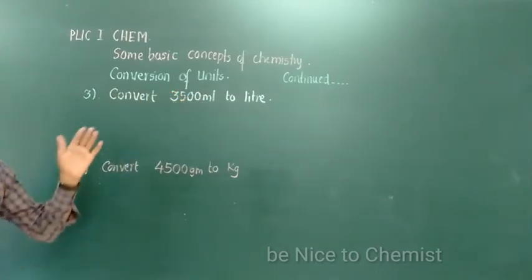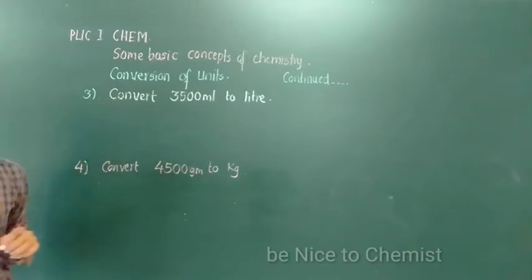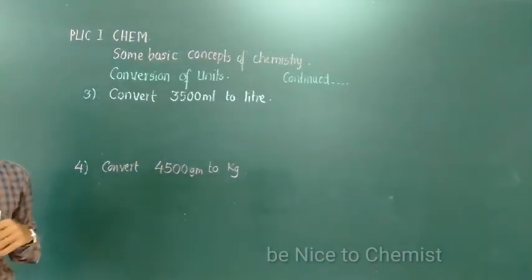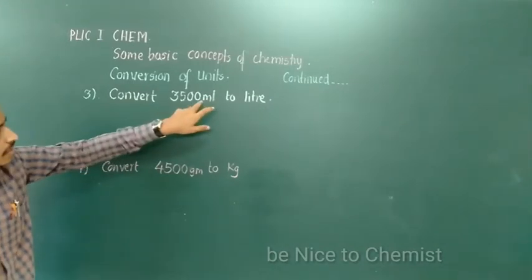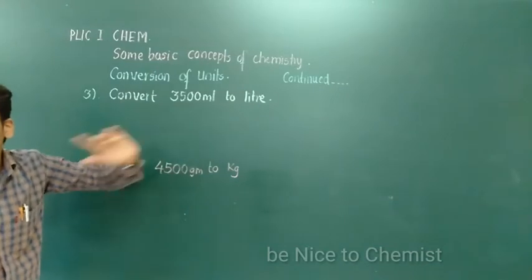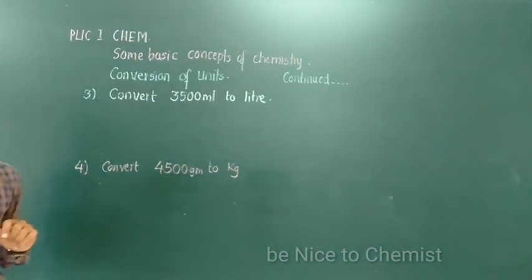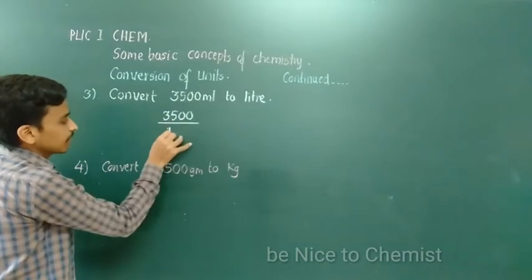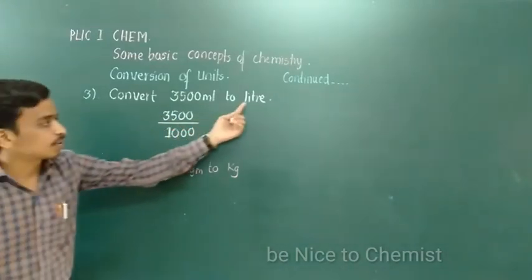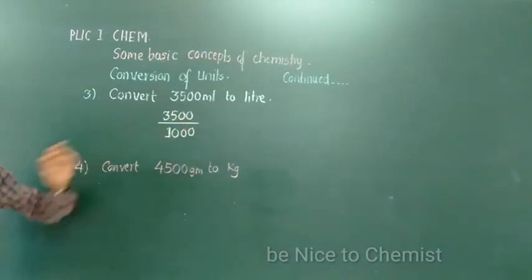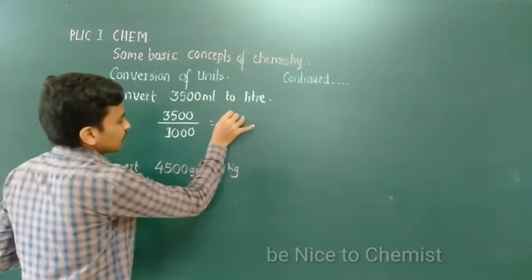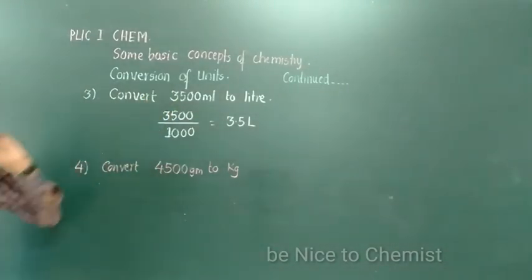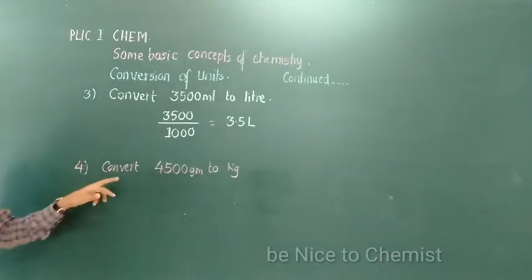Here is the third problem: convert 3500 ml to liters. It is quite a simple problem. To solve it, 3500 is divided by 1000, because one liter equals 1000 ml. Therefore 3500 divided by 1000 gives the answer directly as 3.5 liters. That is the conversion of units here.